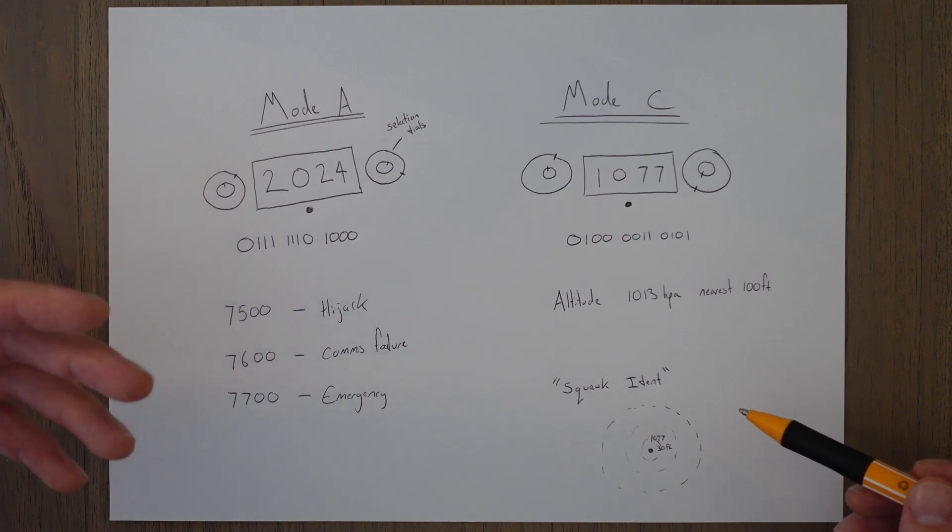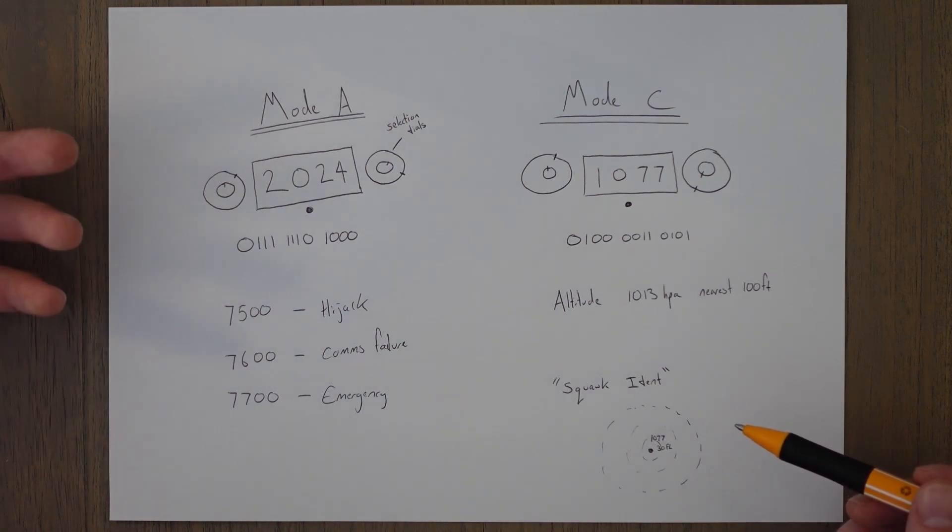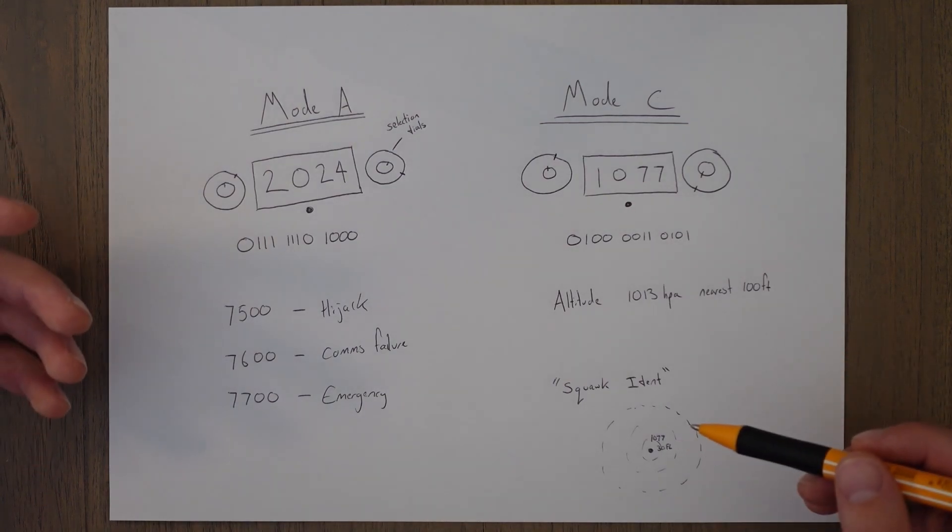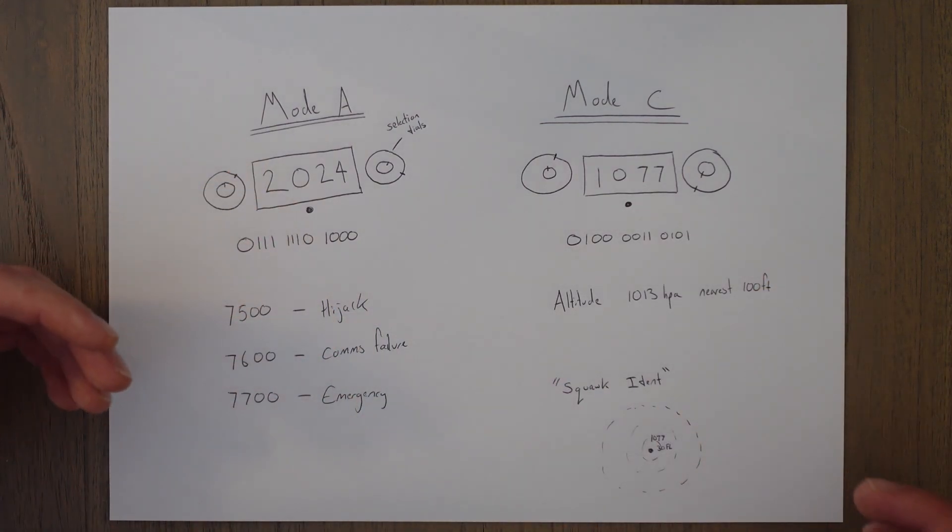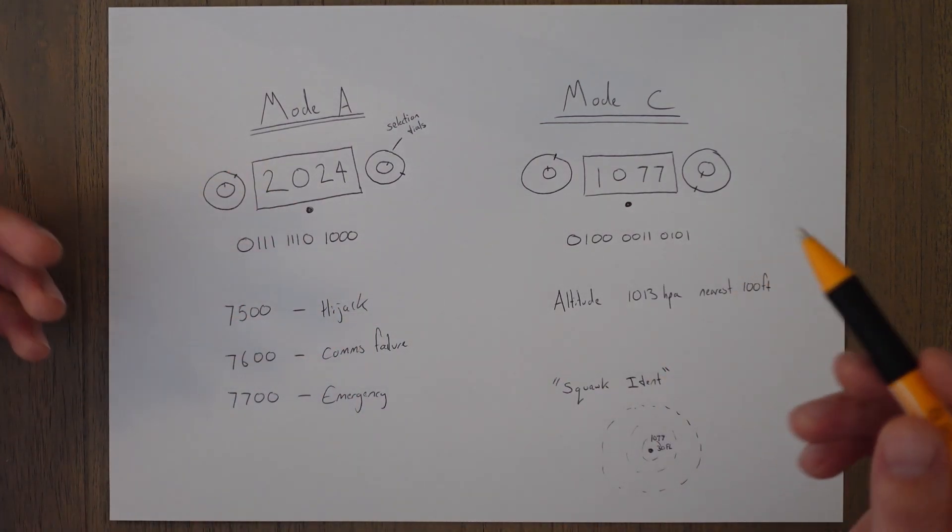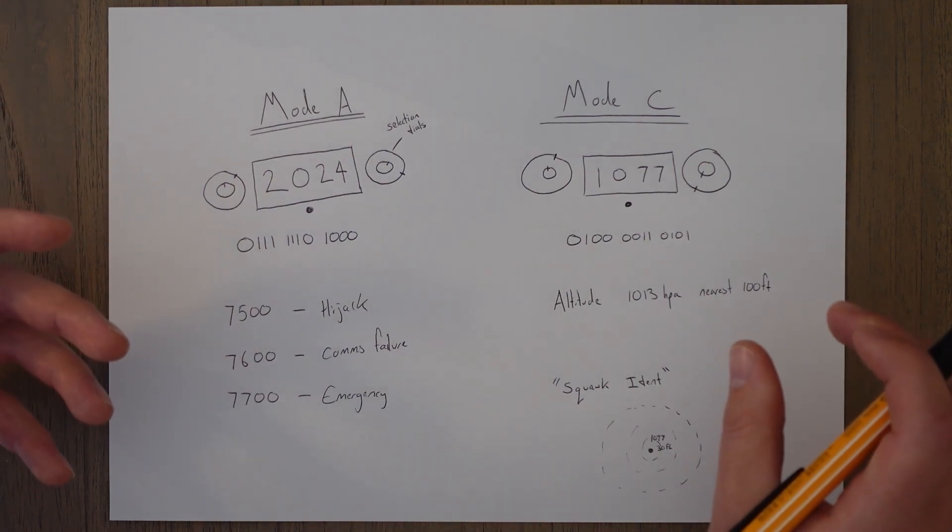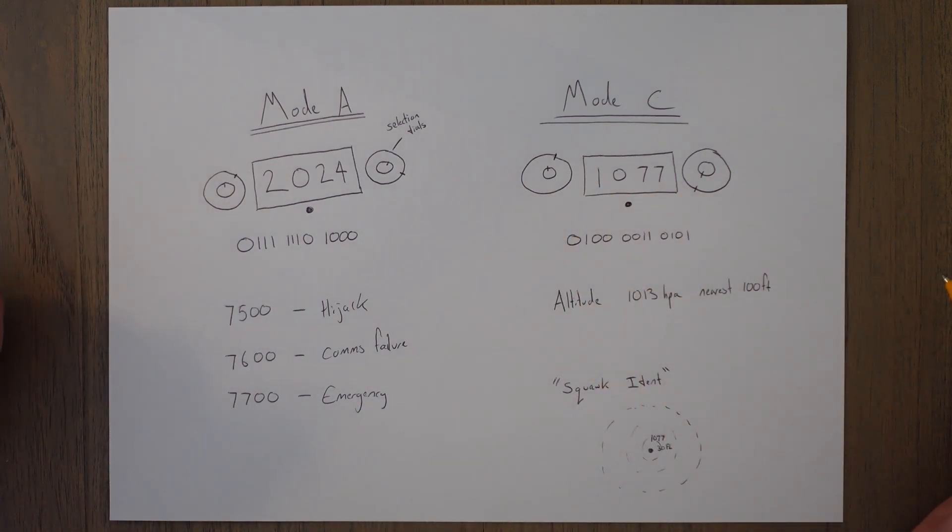The air traffic control might say squawk ident and report level passing, and you'll squawk ident and say we're passing level 3000, and then they'll see a little pulse on their screen and the aircraft that's at 3000 feet, and they'll say okay that's the aircraft that's just joined my airspace. Now I'm aware of that one as well as all the other ones I have on my screen.